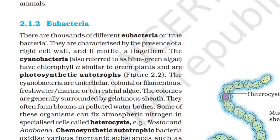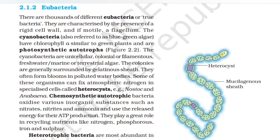2.1.2 Eubacteria. There are thousands of different eubacteria or true bacteria. They are characterized by the presence of a rigid cell wall and, if motile, a flagellum. The cyanobacteria, also referred to as blue-green algae, have chlorophyll A similar to green plants and are photosynthetic autotrophs. The cyanobacteria are unicellular, colonial or filamentous, freshwater or marine or terrestrial algae. The colonies are generally surrounded by gelatinous sheaths. They often form blooms in polluted water bodies.